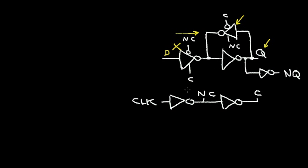So again, when the clock is high, the data can come in — this tri-state driver is in the off state. When the clock goes low, the data is reinforced in this latch and the data is locked out from the input. So this is the only part of the D flip-flop, so let's show the rest of the D flip-flop.